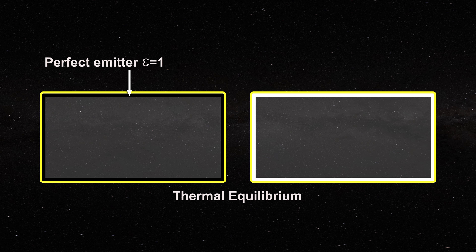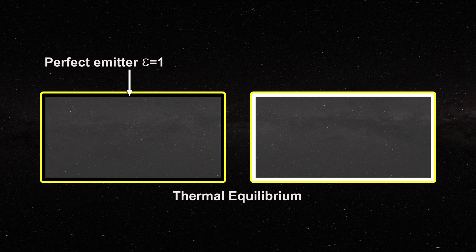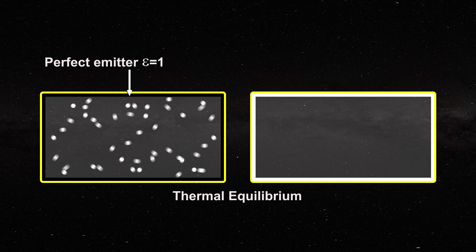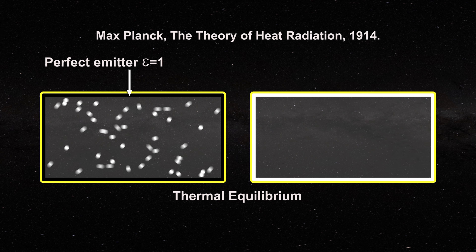The first cavity is a perfect emitter, constructed from idealized graphite with an emissivity of 1. As a perfect emitter, all of the energy in the first cavity is contained in the radiation field with none in the walls. The temperature of this system is uniquely characterized by the radiation field.